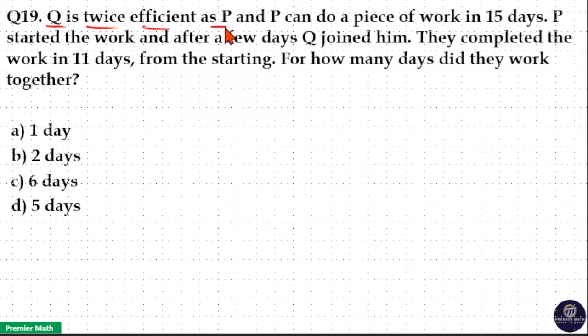Q is twice efficient as P and P can do a piece of work in 15 days. P started the work and after a few days Q joined him. They completed the work in 11 days from the starting. For how many days did they work together?